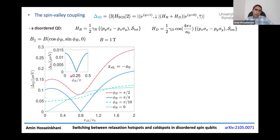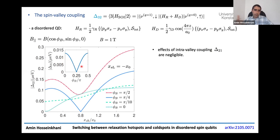For the Dresselhaus term, one must take into account that the Dresselhaus coefficient changes sign when a single monolayer step is encountered. Having these proper forms for the spin-orbit interaction and using our valley-dependent envelope function theory, we can calculate the spin-valley coupling. The intravalley contribution to the coupling is found to be negligible for analyzing the relaxation time.